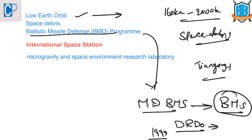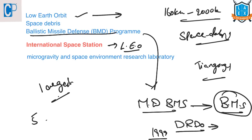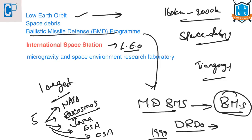What is the International Space Station? The International Space Station is a space station or habitable artificial satellite located in the lower Earth orbit. It is the largest human-made body in the low Earth orbit. It is a joint program between five space agencies: NASA of the United States, Roscosmos of Russia, JAXA of Japan, the European Space Agency, and the Canadian Space Agency of Canada.